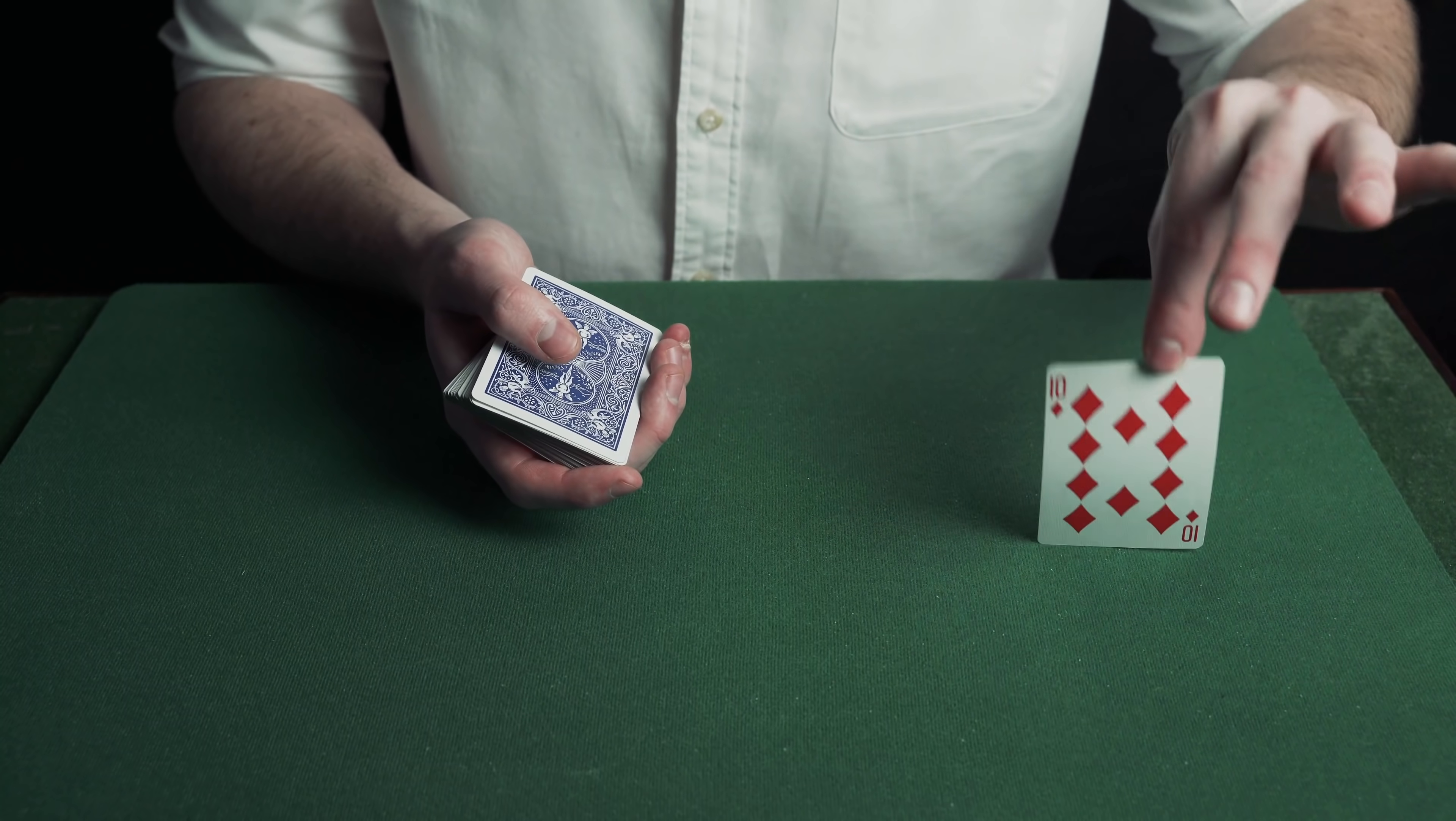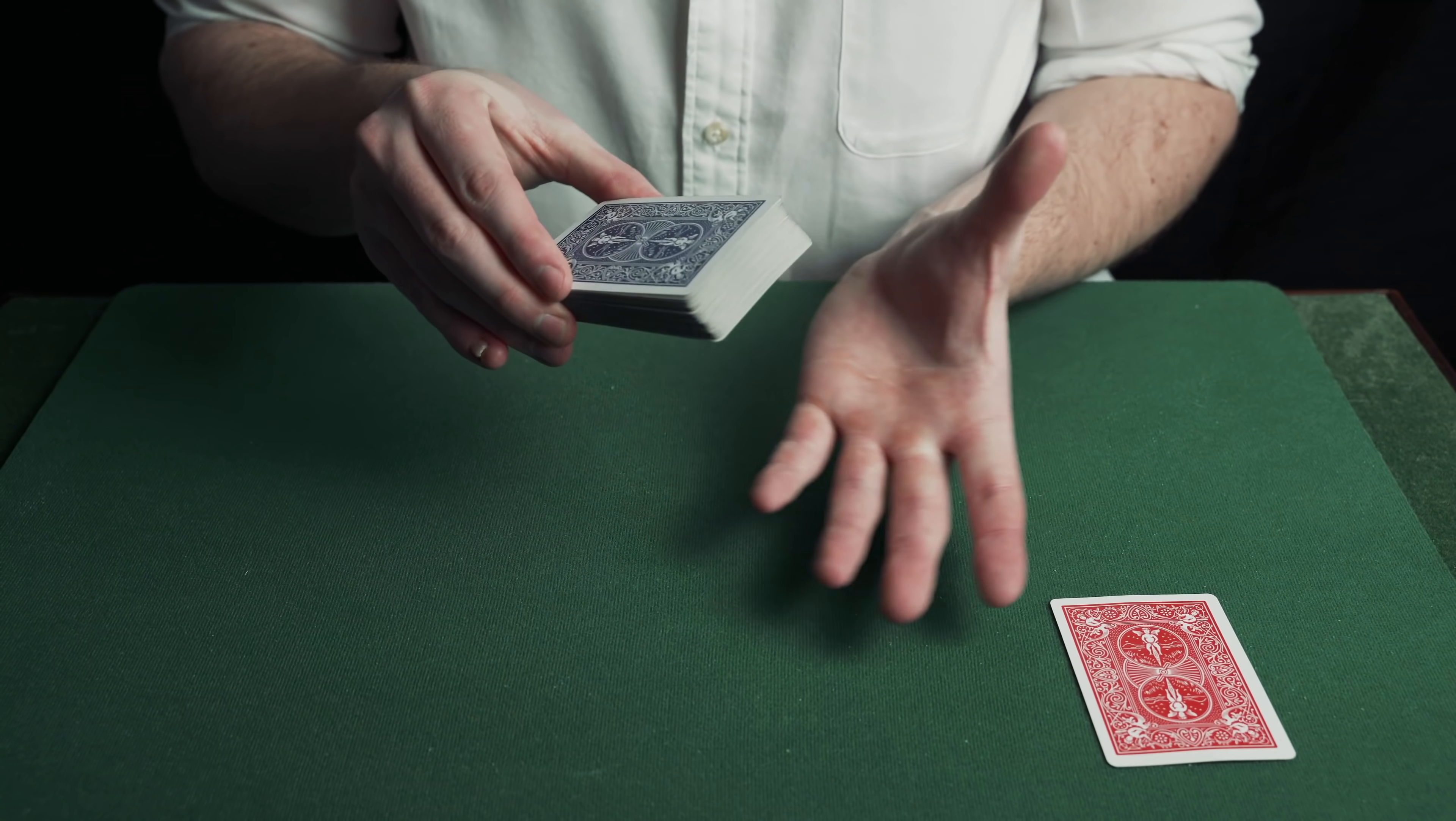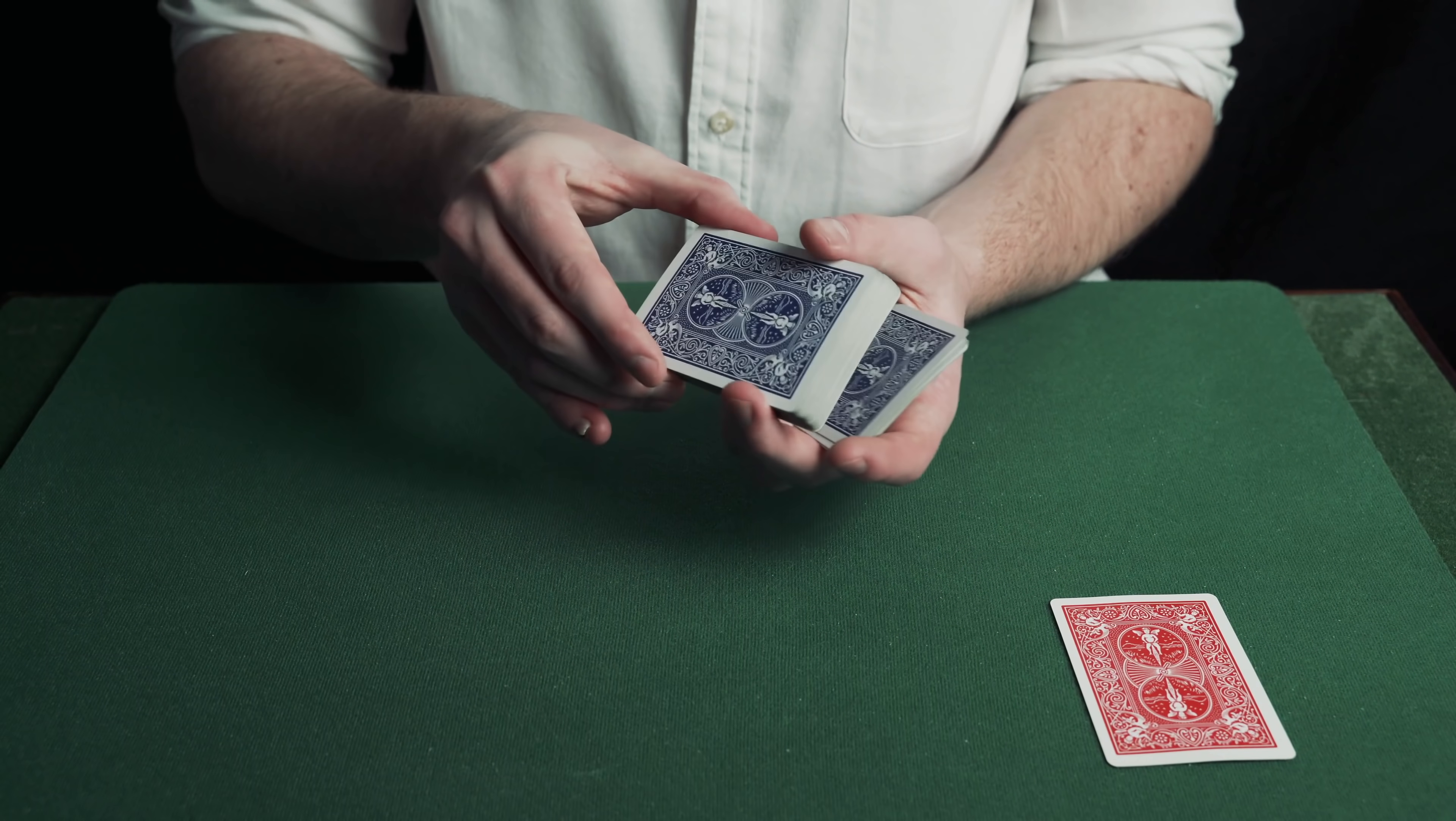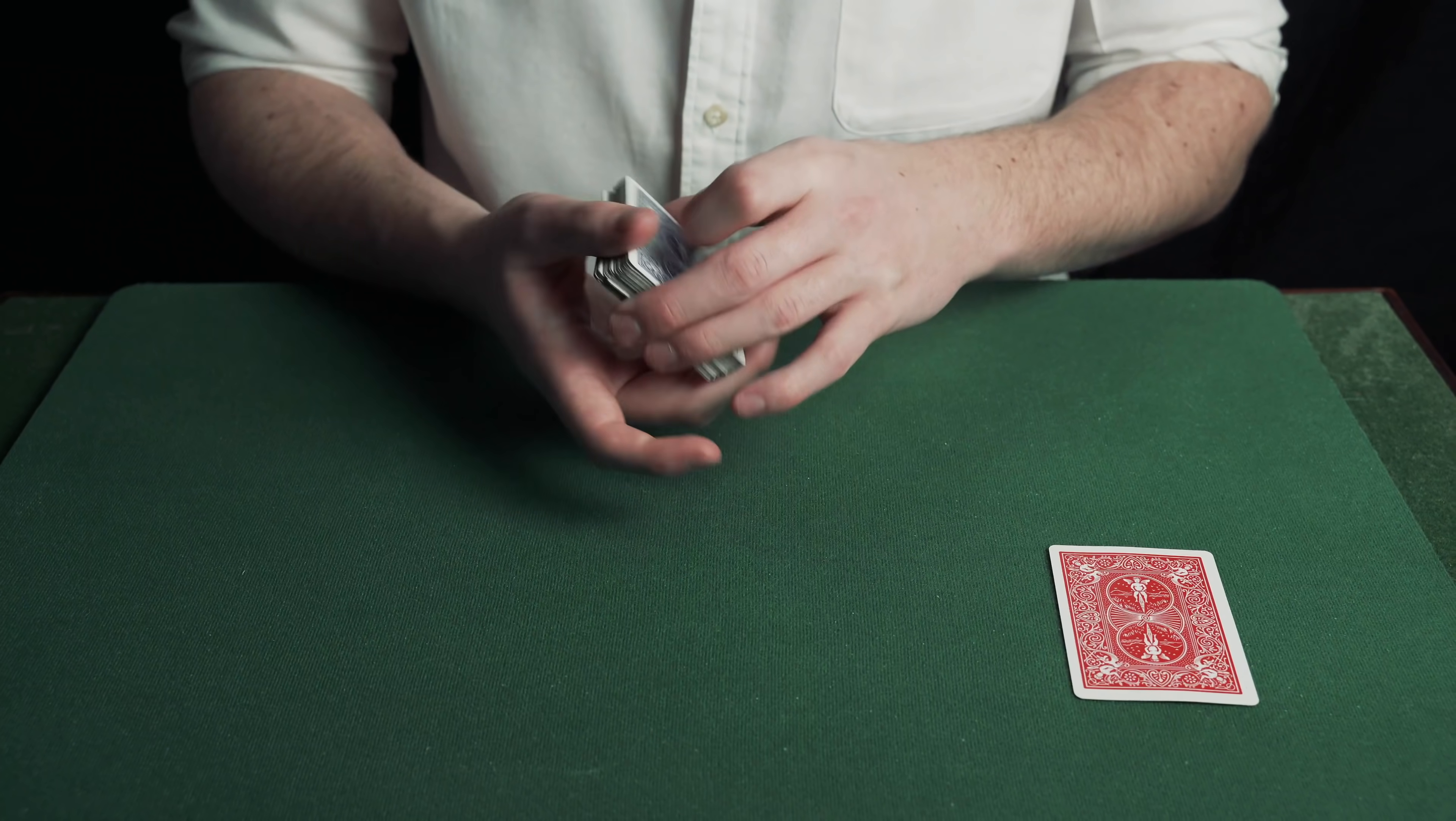Now you need to force the ten of diamonds from the bottom of the deck onto the spectator. In the performance I controlled the card to the top of the deck and then did a classic force, but an easier way to do this is to hold the deck in this position between your middle finger and thumb. Then come over with your other middle finger and thumb and peel off packets of cards in your hand. It will look as if you're shuffling the cards, but the ten of diamonds always stays on the bottom. Now just ask your spectator to say stop and whenever they say stop, show them the ten of diamonds as their chosen card. This is called a Hindu force. I like using this force, but use any force that you like.